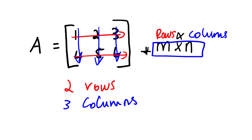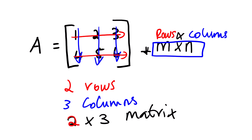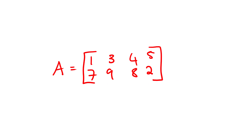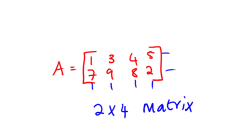We use this notation to describe a specific matrix. Looking at matrix A, you can see that we have two rows and three columns, so this matrix is a two by three matrix. Looking at another matrix with two rows and two columns, we say this is a two by two matrix. And looking at one with two rows and four columns, this is a two by four matrix.